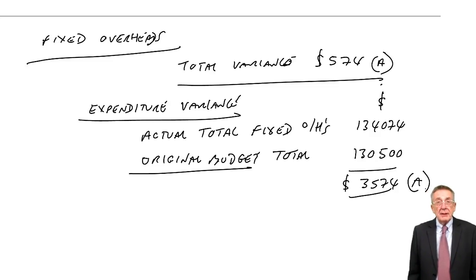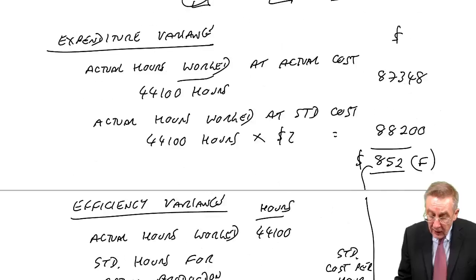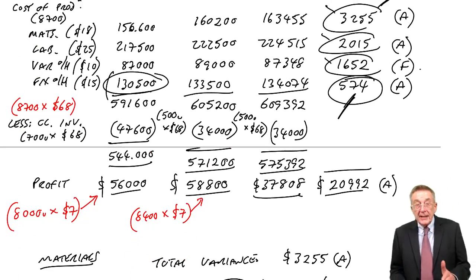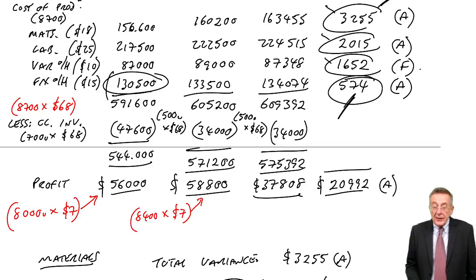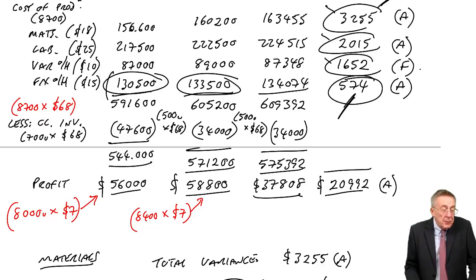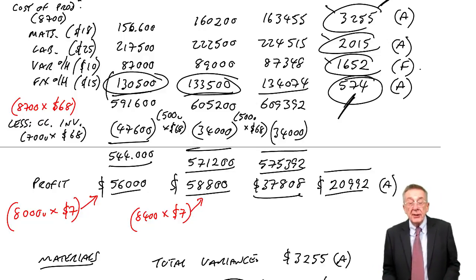But why was our variance on the fixed budget statement only 574? It's because in arriving at the fixed profit, we'd absorbed the overheads at $15 a unit for every unit actually produced. And because we'd produced more units, we'd ended up charging more fixed overheads. It was a problem we had when we had the absorption costing lecture ages ago. And so that's what's created, if you like, the difference.